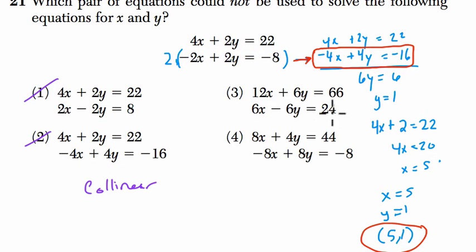Now choice 3, let's go to that one. We have 12x plus 6y equals 66. So here they tripled 2y to get 6y, and they tripled 22 to get 66, and they tripled 4x to get 12x. So so far, that's good.